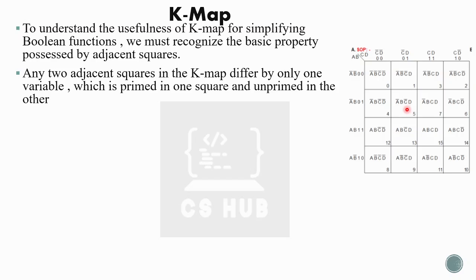Consider the fifth cell: its value is 0101. The 13th cell's value is 1101, meaning the first bit is primed in one and unprimed in the other, while all other bits are the same. Consider the seventh cell: its value is 0111, compared to the fifth cell's 0101. Every adjacent cell differs by only a single bit. This is the most important property of Kmap.